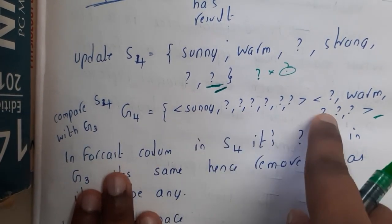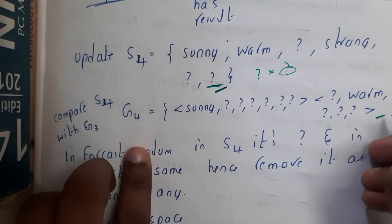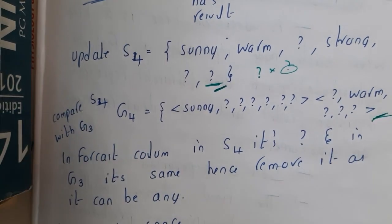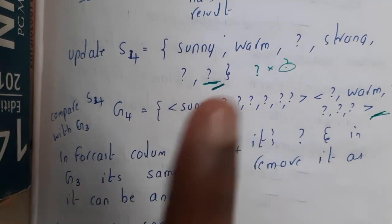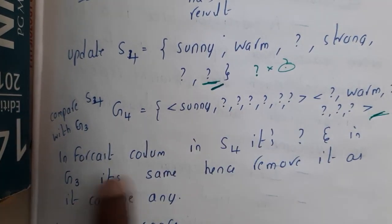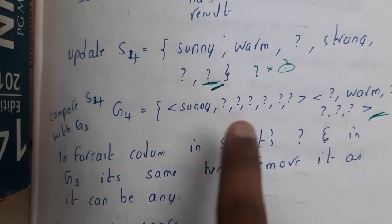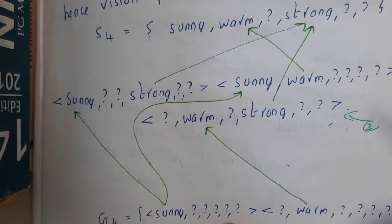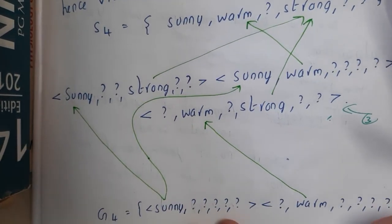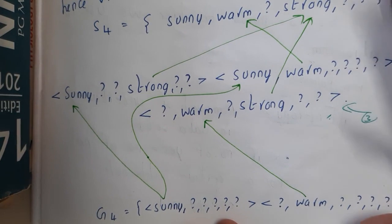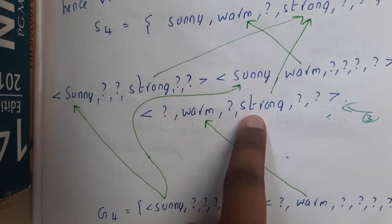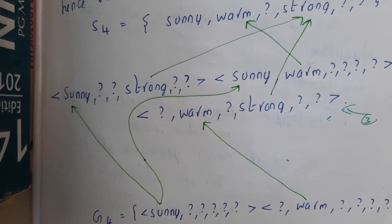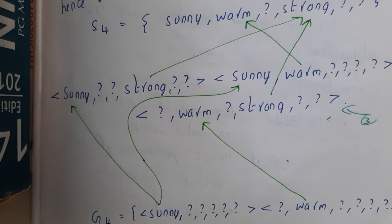Now I hope everyone has a clear idea of how it became only two parameters. I want to correct that issue first. A few of you also mentioned you did not get a clear idea of how I derived the version spaces and were a bit confused, so I thought of explaining it in a simpler way now.